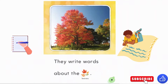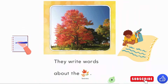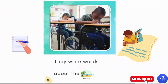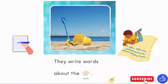They write words about the leaves. Look at the leaves — those are very beautiful, colorful leaves. They're red, they're orange, all different types of colors of leaves. There are many different words that we can use to write about the leaves.